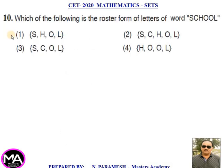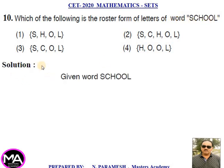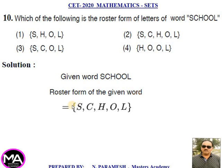10th question. Which of the following is the roster form of the letters of the word SCHOOL? Four options are given. Solution: The roster form of the given word is the set {S, C, H, O, L}. That is option second.